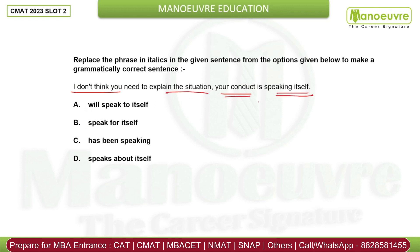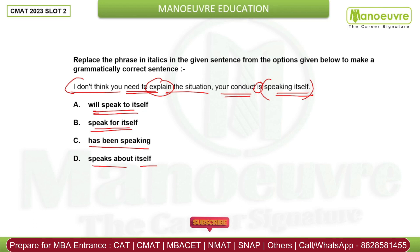Next: 'I don't think you need to explain the situation. Your conduct is speaking itself.' Now, 'I don't think' is present tense — that is okay. But where is the problem? The option is 'speaks for itself.' 'Has been speaking' — that is not correct. 'Speak for itself' — this is the right idiom. 'Will speak to itself' is wrong — that means your conduct will talk to itself. So the answer should be D.